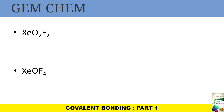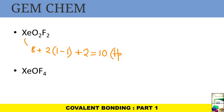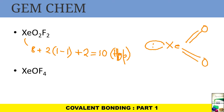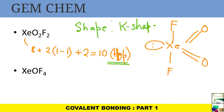For XeO2F2: xenon has eight electrons, plus two oxygens each contributing +1 sigma −1 pi (net zero per oxygen), plus two fluorines contributing +2, giving ten — a TBP structure. The lone pair and the two double-bonded oxygens occupy equatorial positions, the two fluorines occupy axial positions, and the shape is seesaw or K-shaped.